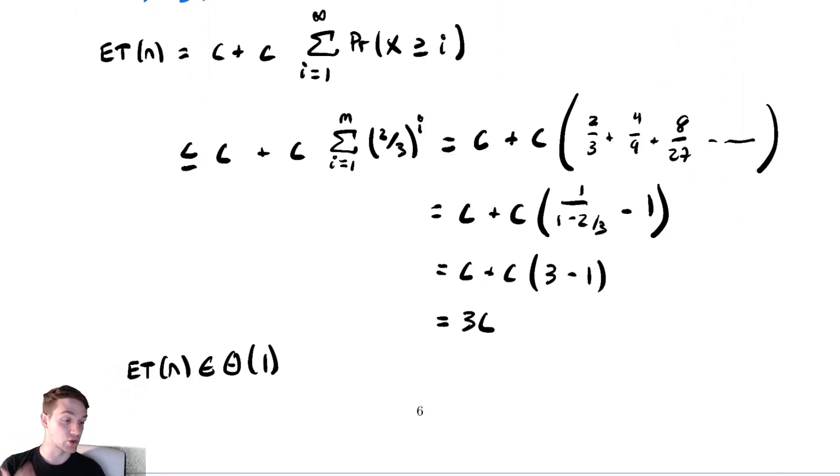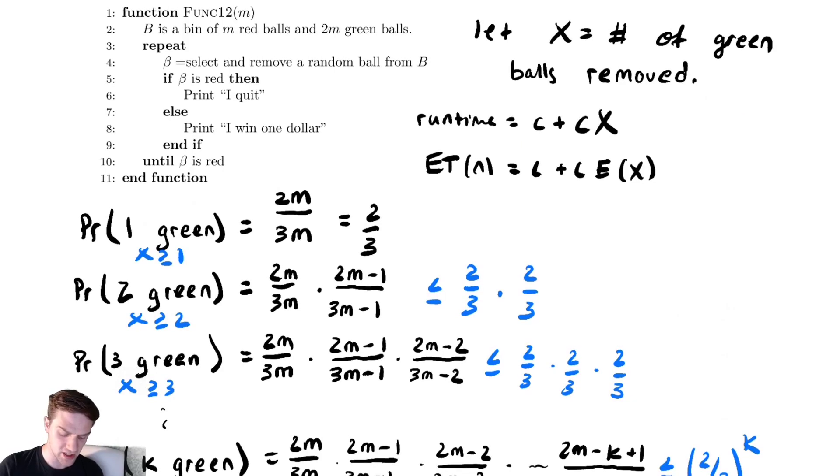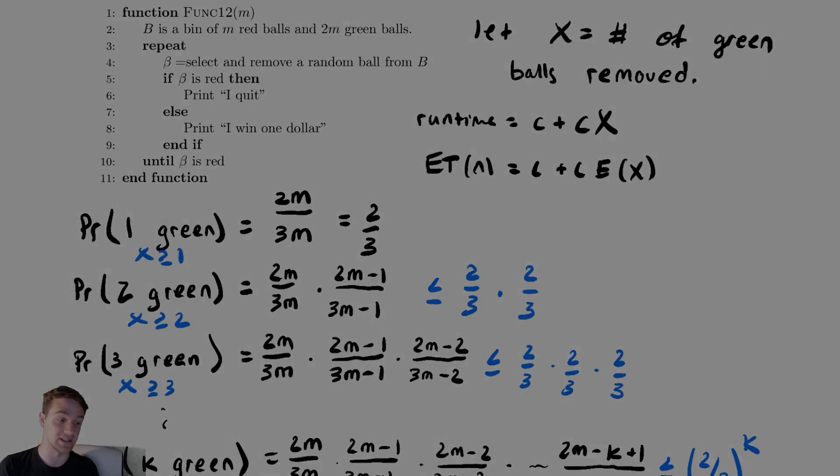This might seem like a very contrived probabilistic example where we've made up this obscure situation with having these set of balls and a set of bins and we're pulling things out and removing them, but this will actually be almost identical to the analysis we're going to use when we look at open address hashing in a couple of weeks. So this may have seemed like a very abstract problem, but we will revisit it later.